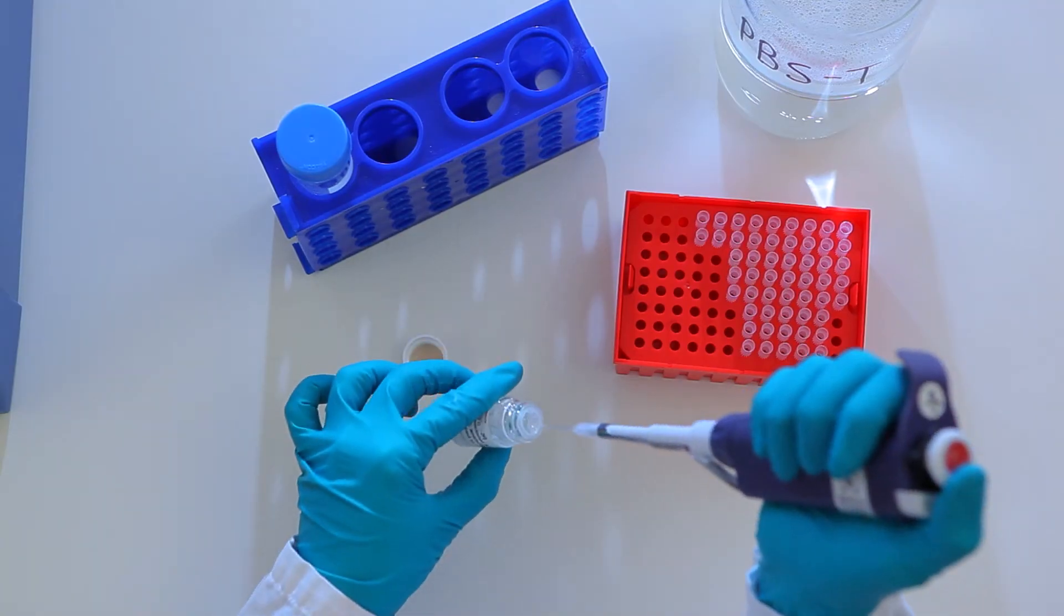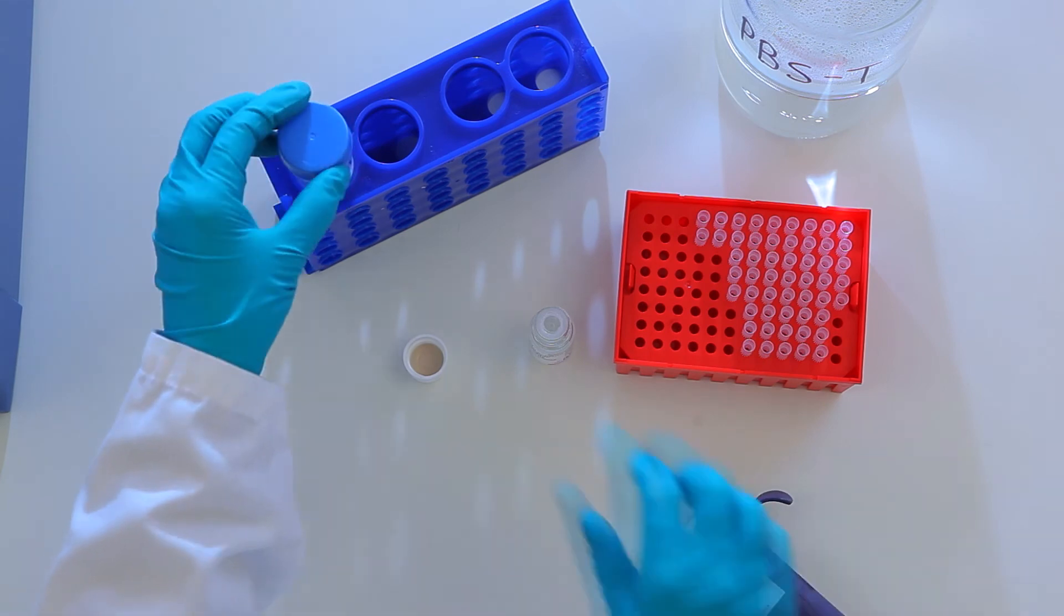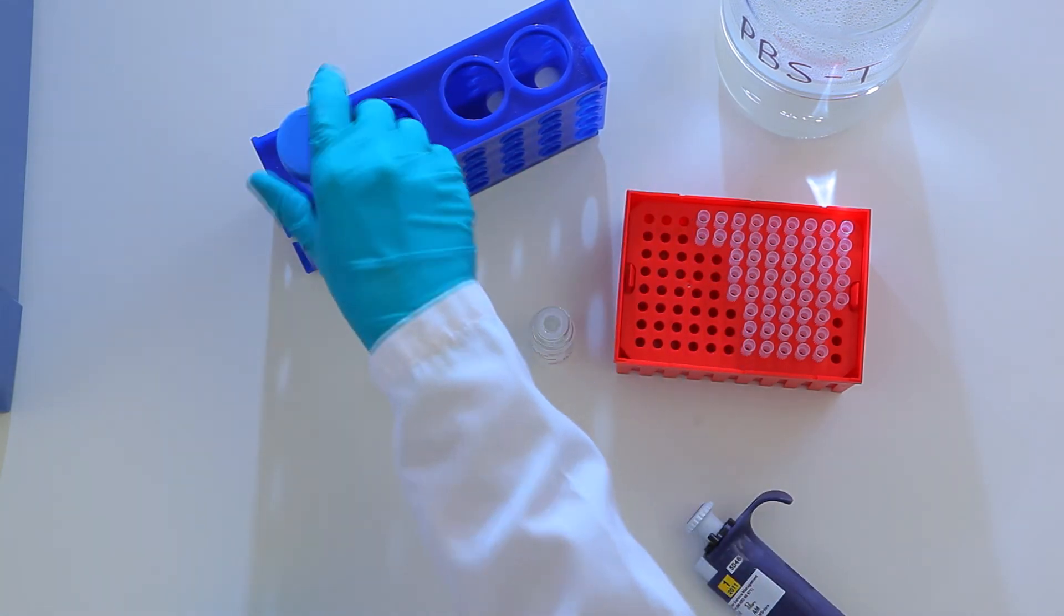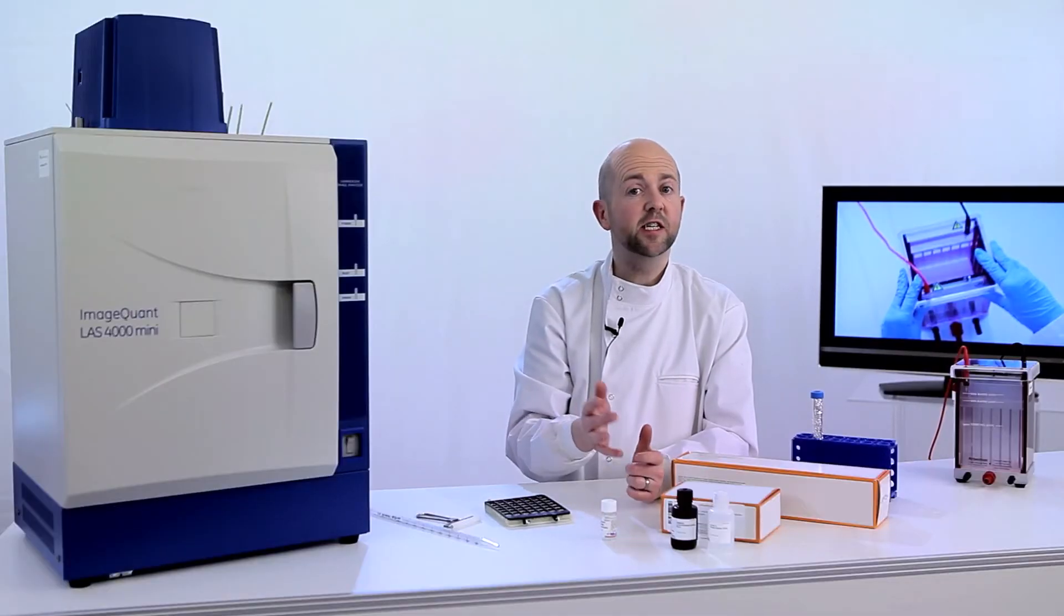After incubating the membrane in the primary antibody for one hour at room temperature, the membrane is incubated in an appropriate HRP-labeled secondary antibody. When using ECL prime, the secondary antibody can be diluted in the range of 1 to 50,000 to 1 to 200,000.